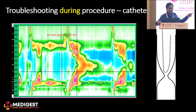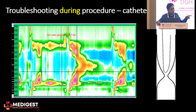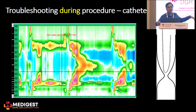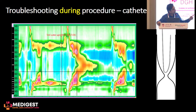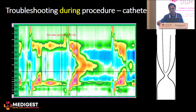Sometimes you can get a batwing kind of appearance, where you see peristalsis moving forward and then coming back — which never happens with true peristalsis. The problem here is that the catheter is kinked inside the esophagus, giving you a false batwing appearance in the pressure graphs.